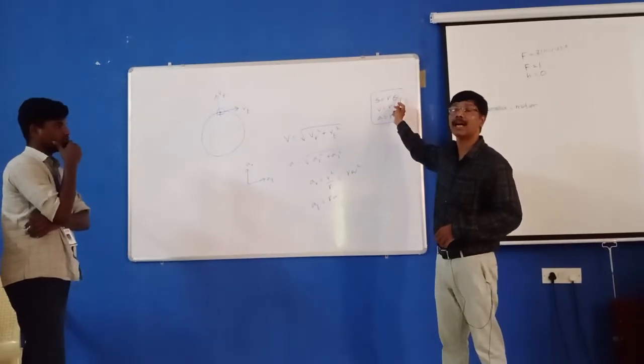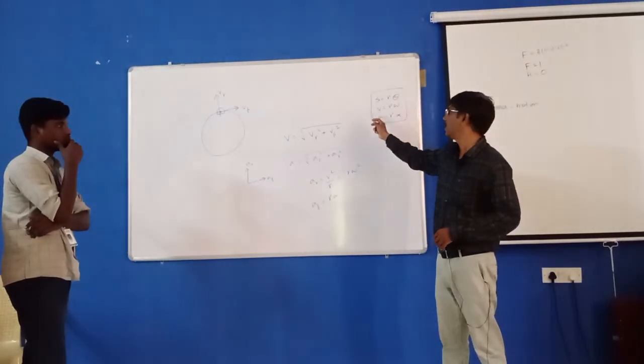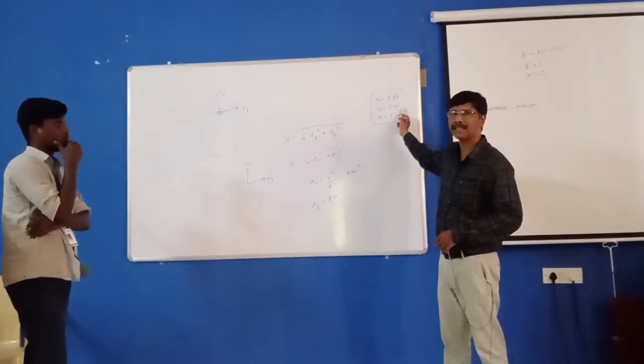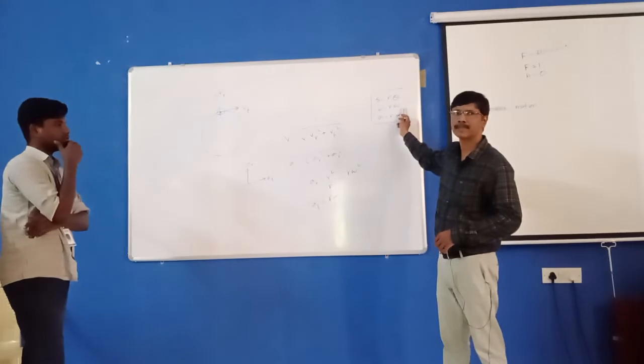Theta is the angular displacement. V equals R omega, where V is the velocity and omega is the angular velocity.